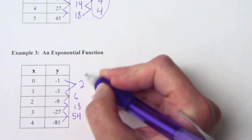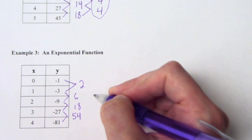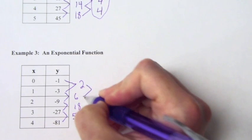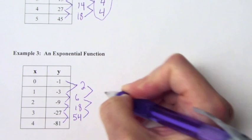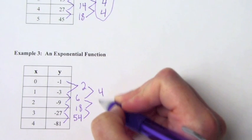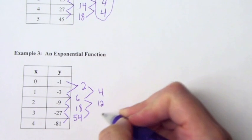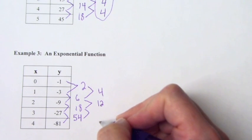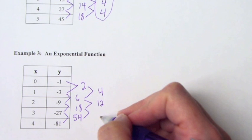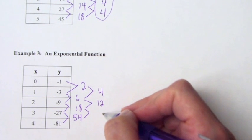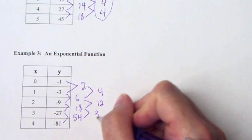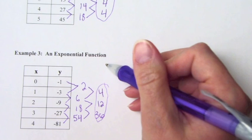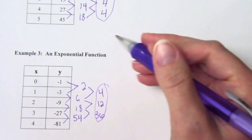So we look at this. These differences are not the same, so we know it's not linear. So let's check it again. See if we get the same here. This one is 4. Difference here is 12. Difference here is 36. Either way, our differences are not the same, so it's not quadratic. So that's what an exponential function is going to look like. It's not going to be linear. It's not going to be quadratic.